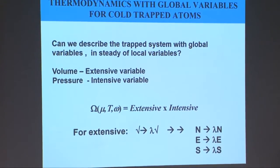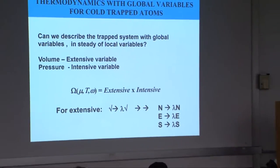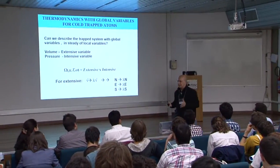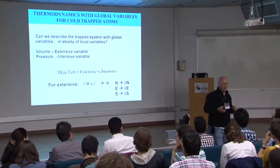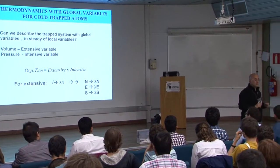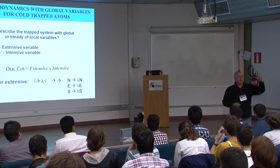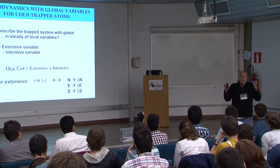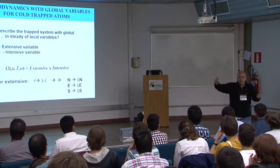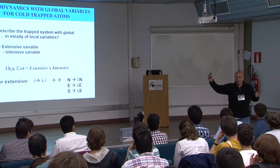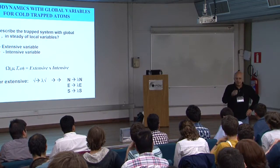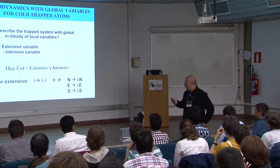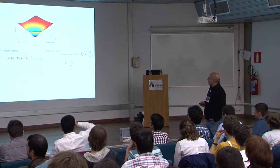You all know that the grand potential that comes from the grand partition function, it is a product of an extensive and intensive variable like volume and pressure. Maybe you recall that extensive variables are the ones that when I scale the system, I multiply the number and the volume, the property. When I multiply the constant, if it is extensive, I have to multiply the number by the same scale to keep everything constant. This is an extensive variable. An intensive variable is the one that I scale the extensive variable and does not change.